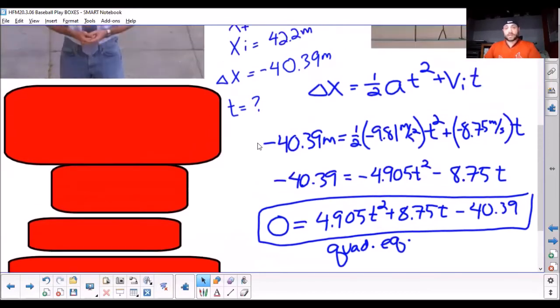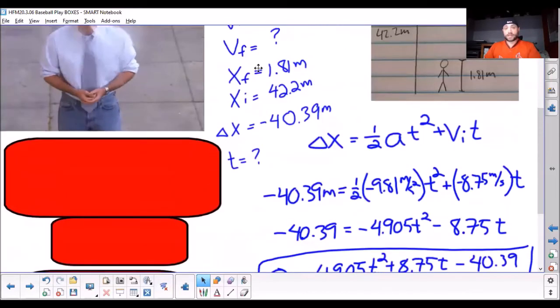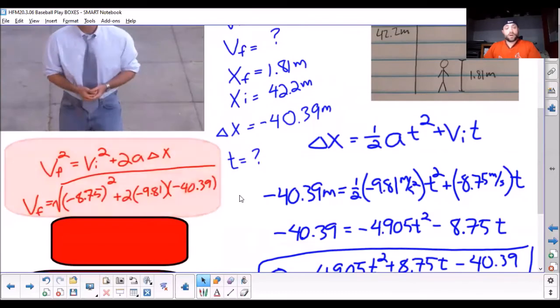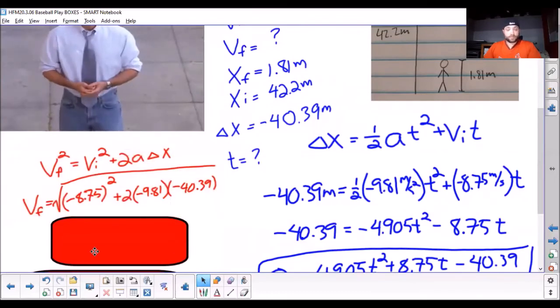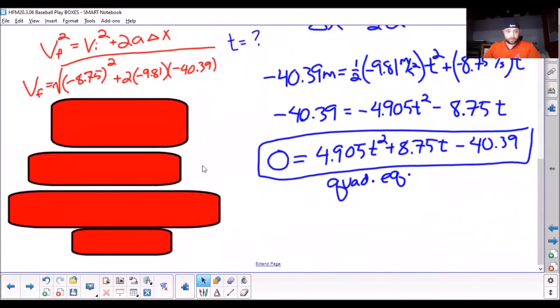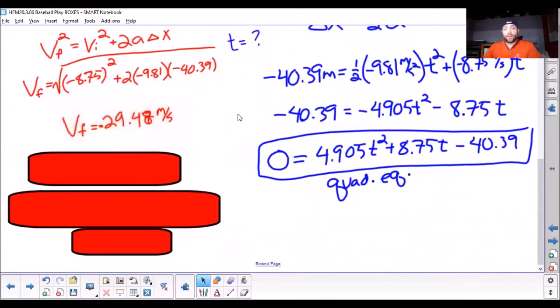So, the other way of doing this is, because we didn't know final velocity, we picked this equation. But what if we said, well, what if we found final velocity? So, if we use this equation, we can solve for the final velocity. And we find out that it's negative, because it's going down 29.48 meters per second.